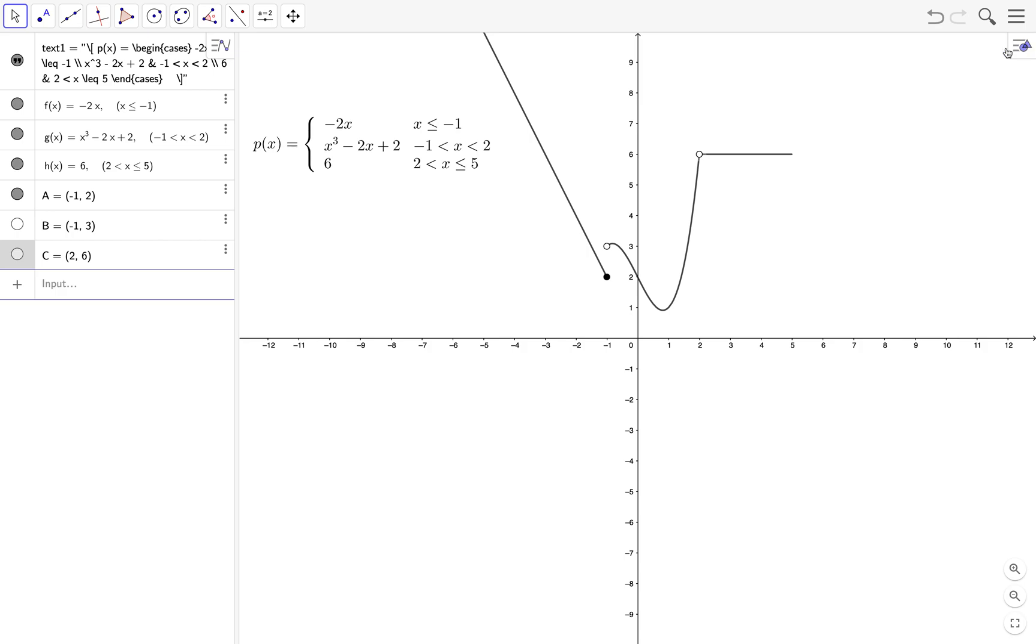And lastly we have at 5, 6. Here the point is defined so we can just change the color to black.